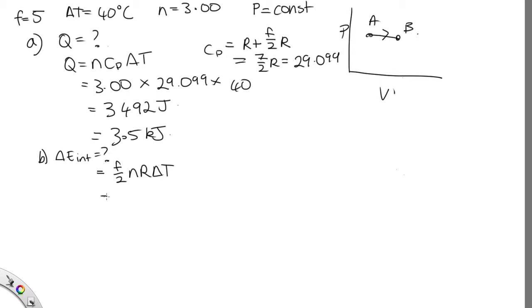We know what all these things are in this case. So we've got 5 over 2 times 3.00 times 8.314 times 40. Solving this on the calculator, we end up with 2,494 joules, which is equal to 2.5 kilojoules.